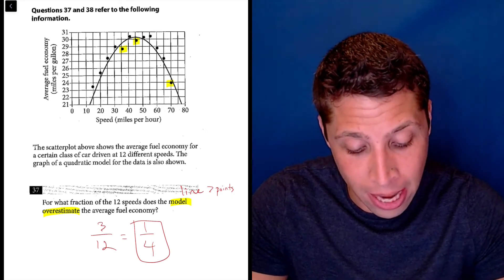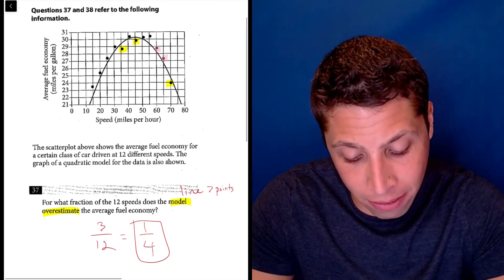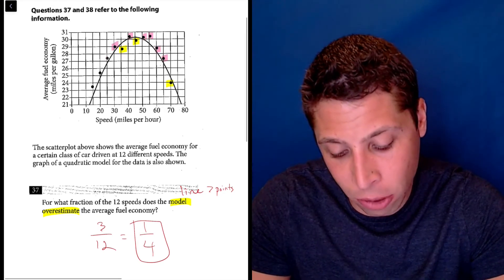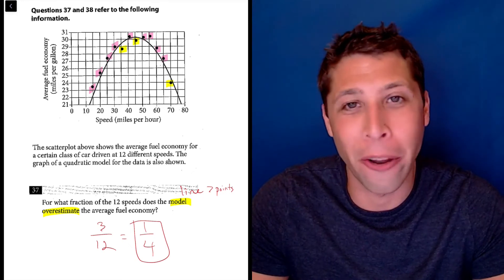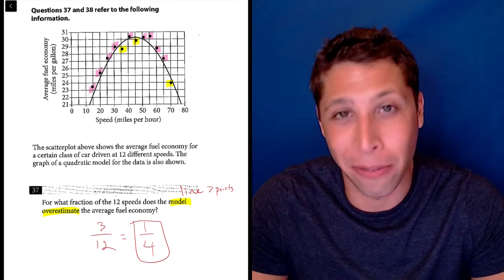So that's our three, and then four, five, six, seven, eight, nine, 10, 11, 12. Now we have all the dots accounted for, so we know that three out of 12 is the right fraction.